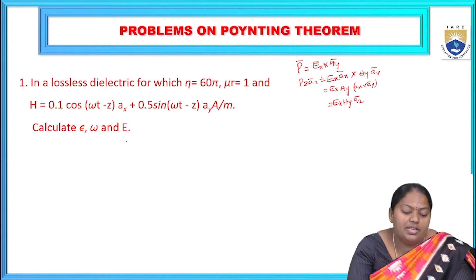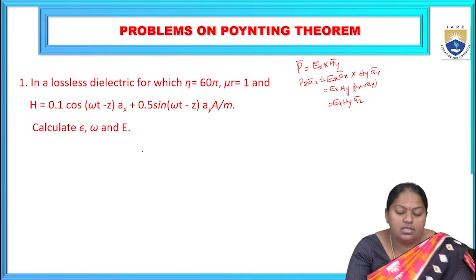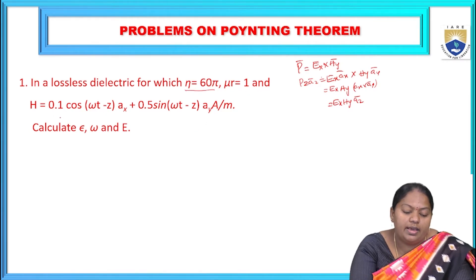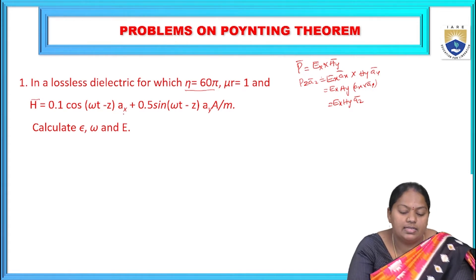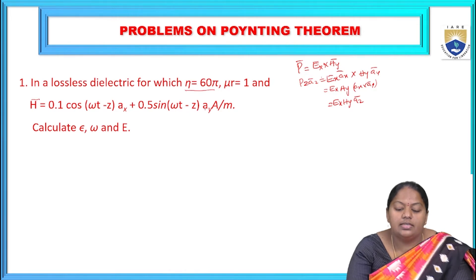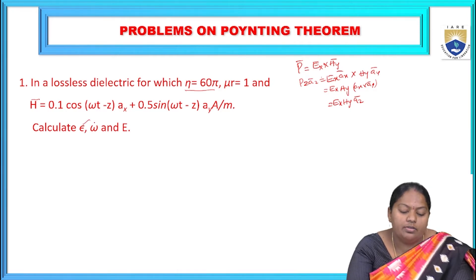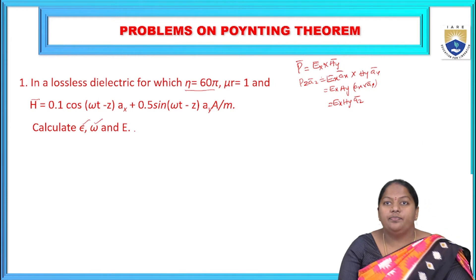The first problem: in a lossless dielectric for which eta = 60π and mu_r = 1, H is given as 0.1 cos(ωt − z)·ax + 0.5 sin(ωt − z)·ay ampere per meter. We need to calculate epsilon, omega, and E.